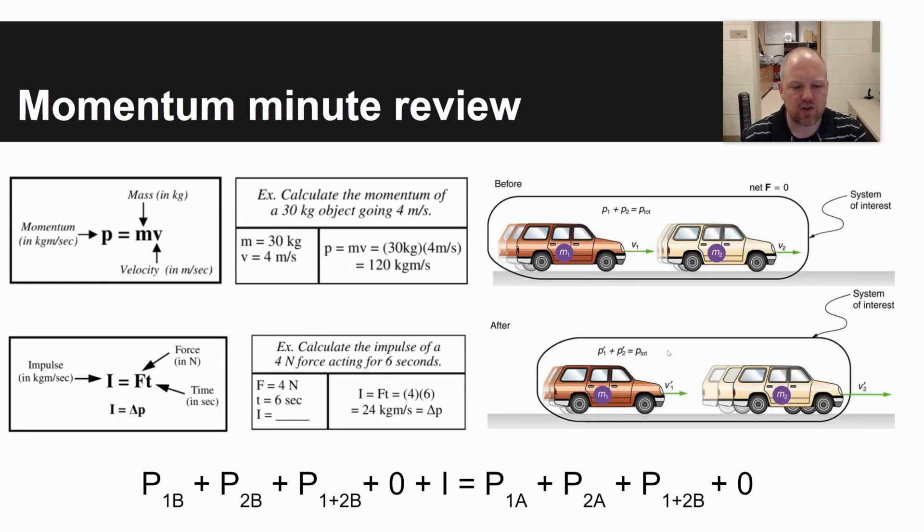Across the bottom of the screen, there's a very large equation, P1B, P2B. So that's used for conservation of momentum, where you can have all sorts of different things happening. You kind of need to write your own equation. P stands for momentum, 1 represents object 1B before, 1 plus 2 would be two objects stuck together, 0 if nothing's moving before, I is impulse. And so you choose what applies to a given circumstance and write your own equation to solve for some unknown variable.